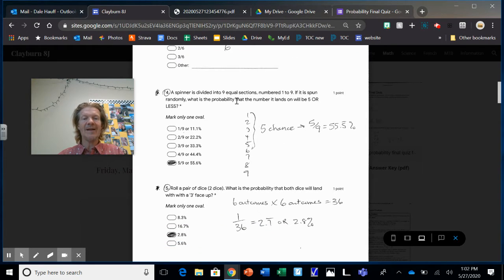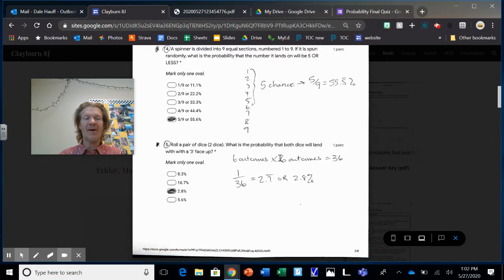A spinner divided into nine equal sections, numbered one to nine. What's the probability of a five or less? So you could get a five, four, three, two, one. So there's five chances. You get a one or a two or a three or a four or a five. Five chances out of nine. So 55.5 repeating percent or 56%, however you wanted to round that.